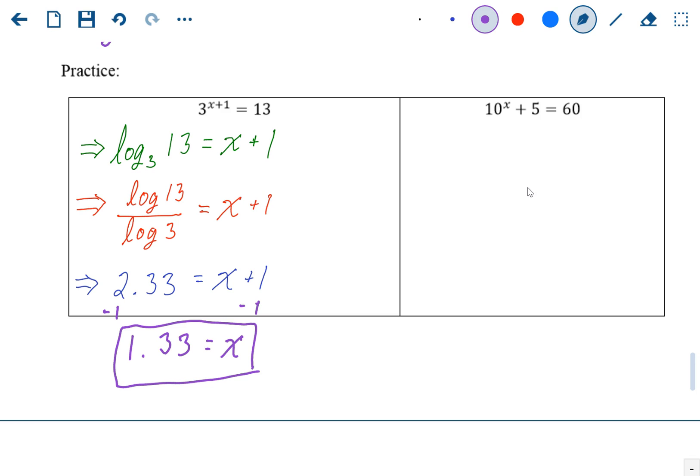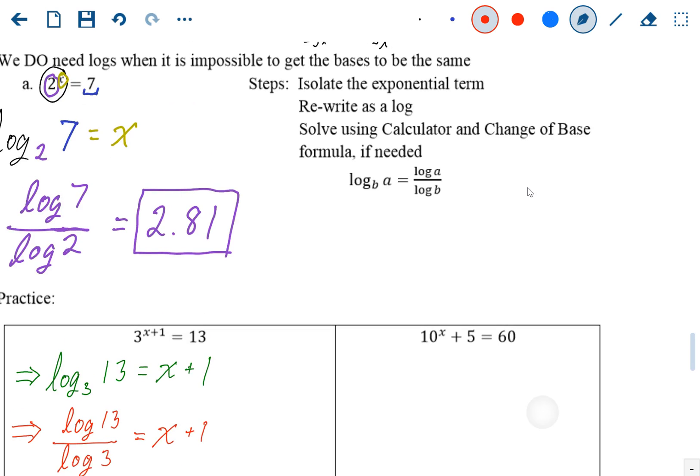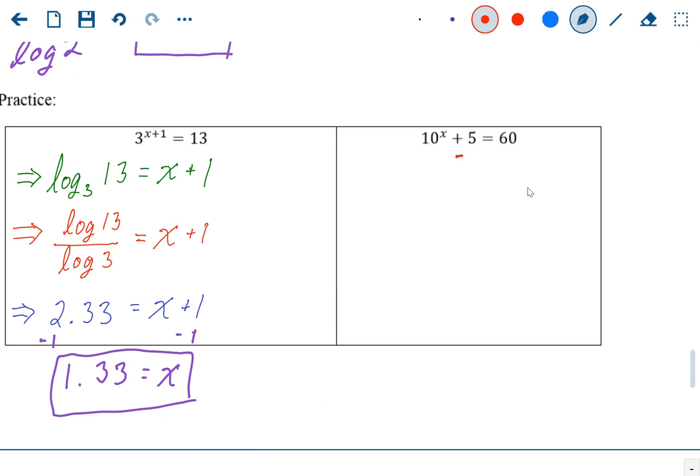All right, now the last one. The last one has that first step: isolate the exponential term. This exponential term is not isolated because there is a plus 5 there. So our first step is going to be to subtract 5, and then we're solving 10 to the x power equals 55.